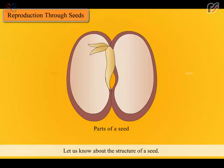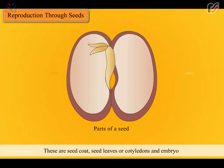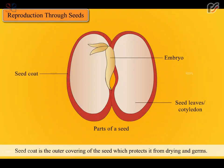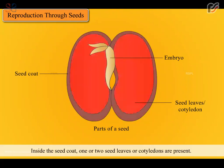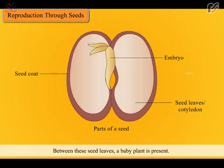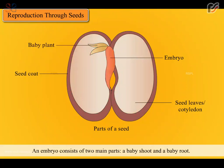Let us know about the structure of a seed. A seed has three main parts: seed coat, seed leaves or cotyledons, and embryo. Seed coat is the outer covering of the seed, which protects it from drying and germs. Inside the seed coat, one or two seed leaves or cotyledons are present. Between these seed leaves, a baby plant is present, also known as an embryo. An embryo consists of two main parts: a baby shoot and a baby root.